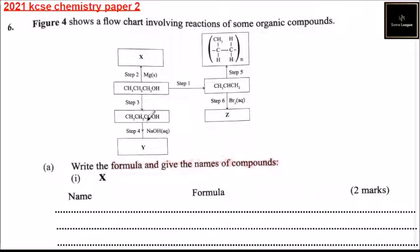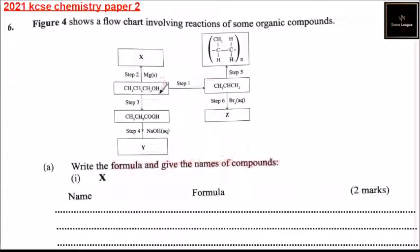Question number 6. Figure 4 shows a flowchart involving reactions of some organic compounds. Starting from the beginning, this formula represents propanol. Step 1 is dehydration to get propene. So this is propene.